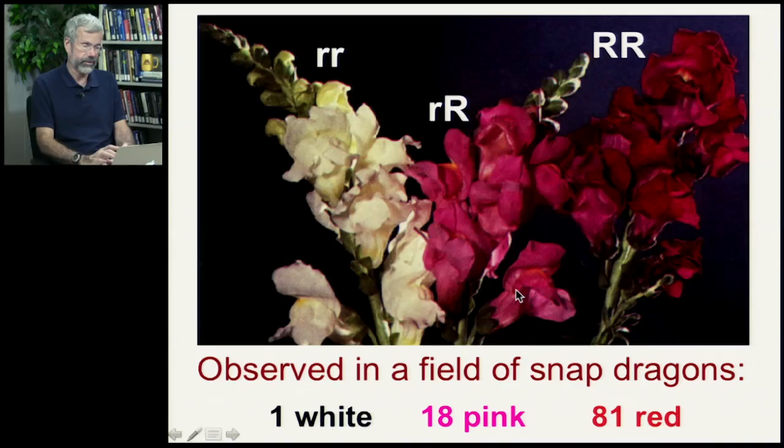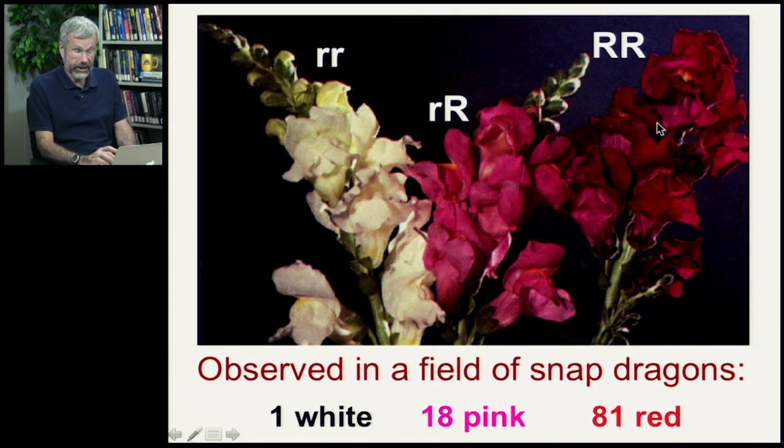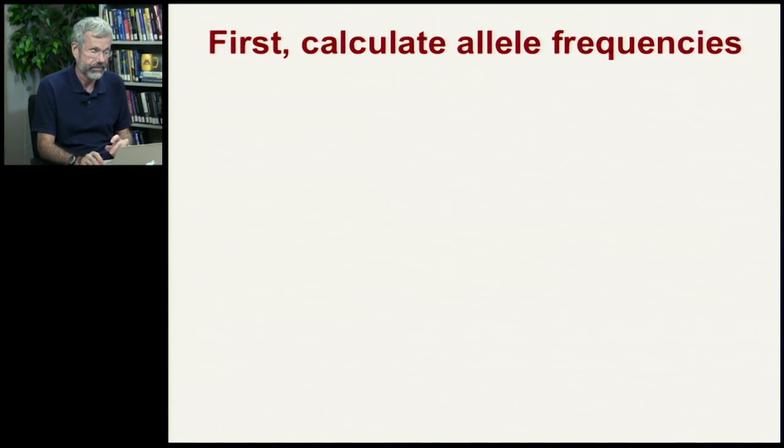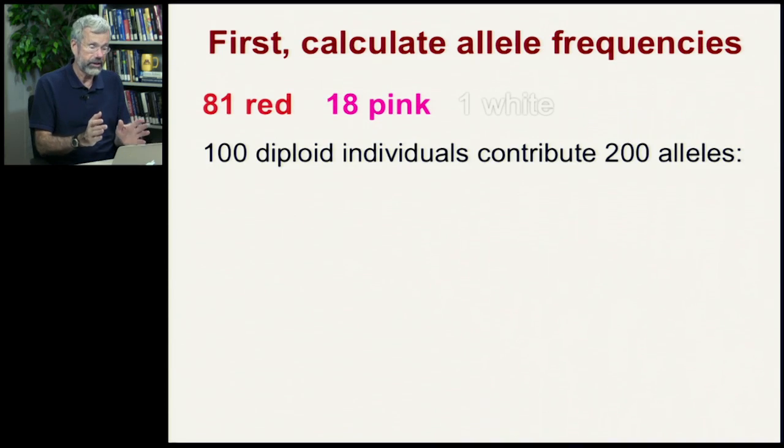So, let's take an actual example and I'm going to walk you through the idea of Hardy-Weinberg. So we've seen snapdragons before. I like them because phenotype equals genotype. If we go into a field of snapdragons and we count out 100 different plants and we find one white snapdragon in a field of 100, 18 that are pink and 81 that are red, we can take that information and we can play around with it. We can have fun with Hardy-Weinberg. So, first thing we want to do is to calculate the allele frequencies. So, we have 81 red plants, 18 pink and one white. There's 100 diploid individuals, so they're contributing 200 alleles to this overall gene pool.